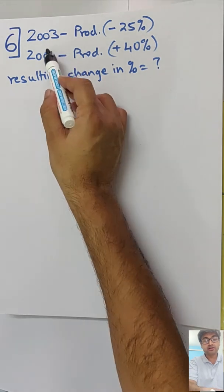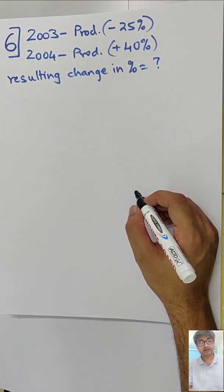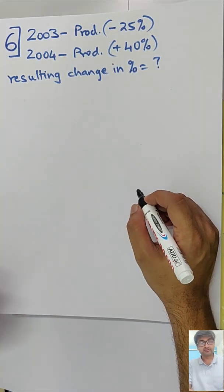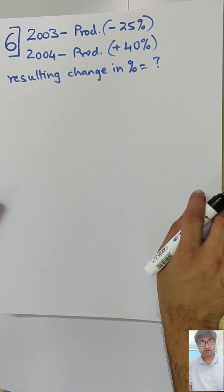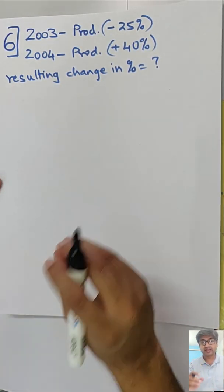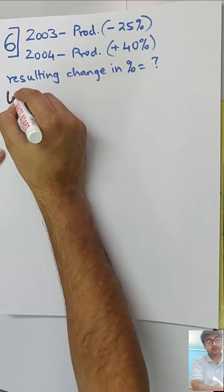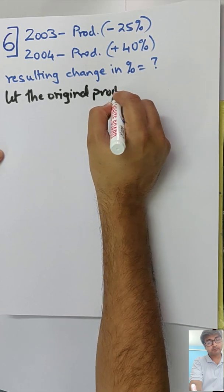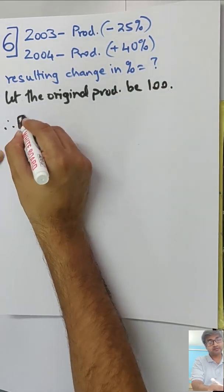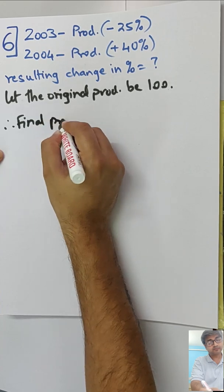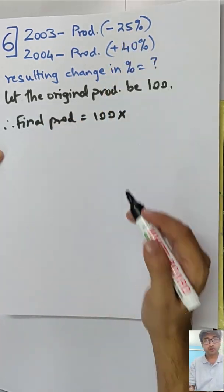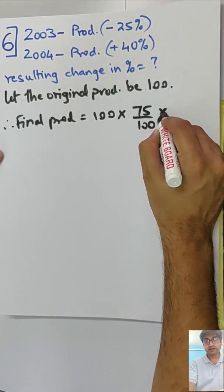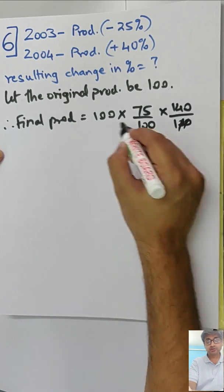They say in a company, the production in 2003 was decreased by 25%, and in 2004 it increased by 40% of the beginning of 2004. What is the resulting change in the percent of production? It's very simple, start with the base as 100 and then go about it. Let the original production be 100.